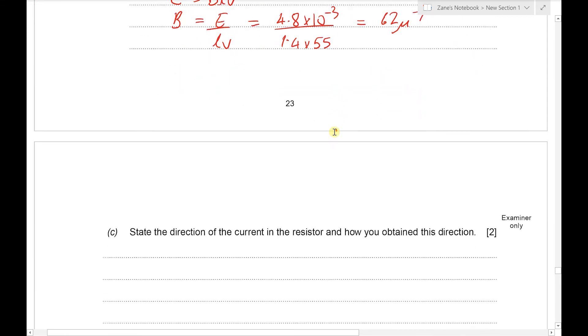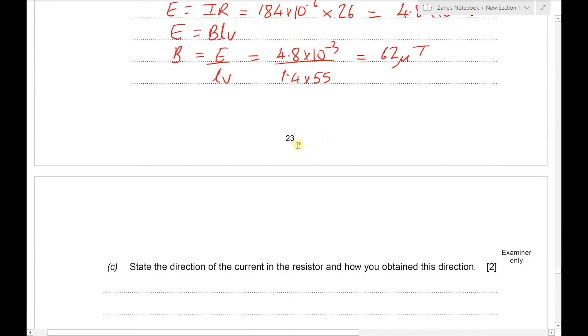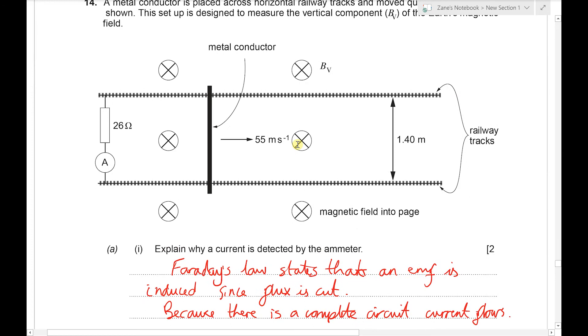Next we've got to state the direction of the current in the resistor and how we obtained this direction. So easiest thing here is to use Fleming's right hand rule. We're going to point our first finger in the direction of the field which will be into the page, we're going to point our thumb in the direction of the motion, and then that will show us that the current through this conductor will be upwards, and hence the current through the resistor will be downwards.